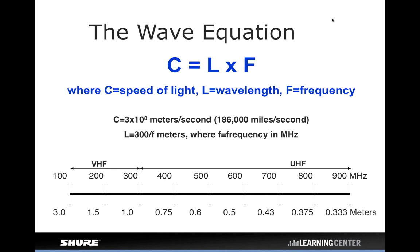Radio waves travel at the speed of light, which means you can apply the wave equation to learn more about them. Any wave has a wavelength associated with it — using the wave equation, you can figure out the wavelength if you know the frequency, or vice versa. As you go higher in frequency, wavelength gets shorter; as you go lower, wavelengths get longer. This plays directly into antenna design and the size of antennas, since antennas must be somewhat tuned to the wavelength of the frequency you're trying to pick up.